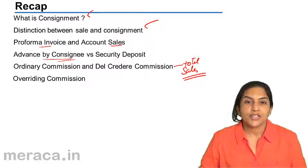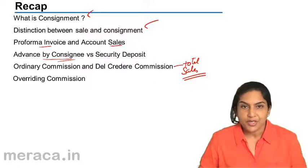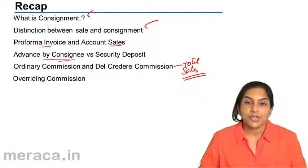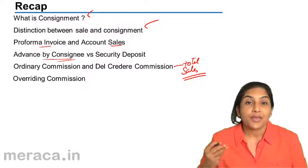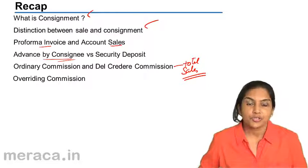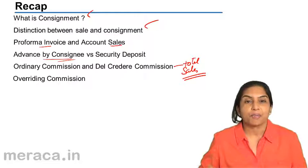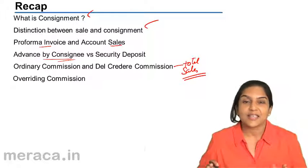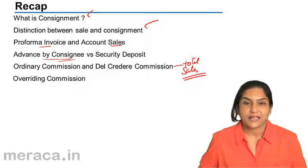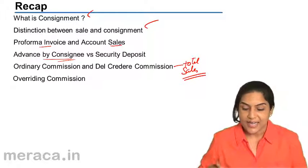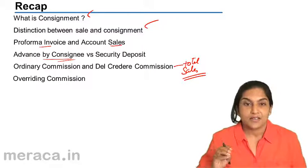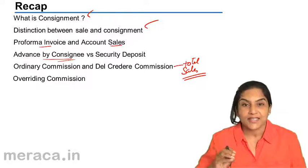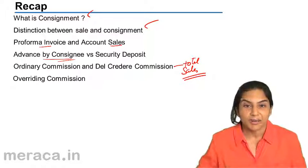We also discussed overriding commission, which is a commission paid in order to increase sales. Usually it is computed as a percentage of the excess selling price that the consignee has been able to collect over and above what the consignor expected or suggested the sale be made at.